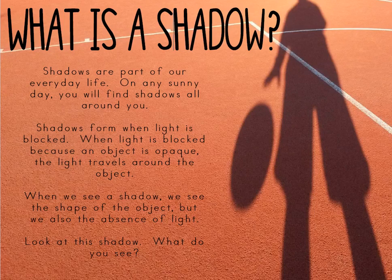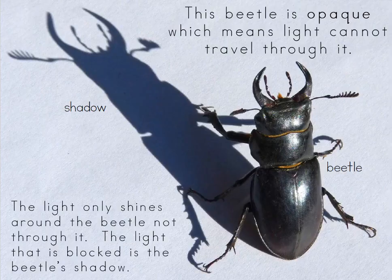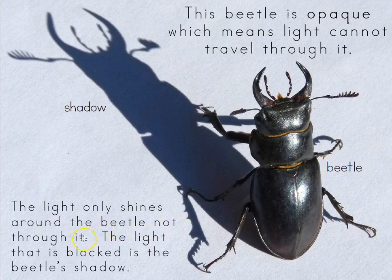Look at the shadow. What do you see? This beetle is opaque, which means light cannot travel through it. So here you can see there's a shadow. There's a beetle. The light only shines around the beetle, not through it. The light that is blocked is the beetle's shadow.